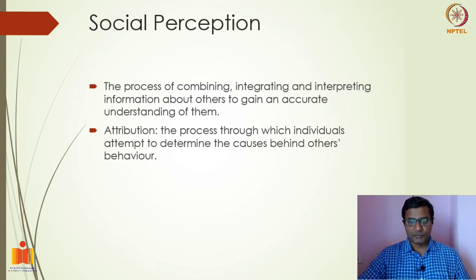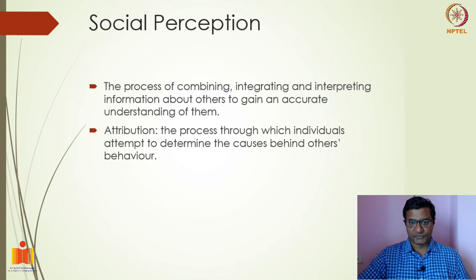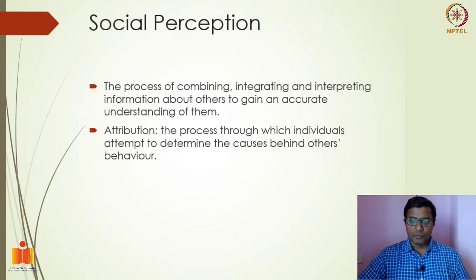The first element of social perception we are looking at is how do we understand ourselves and others, or how do we make sense out of others' and our own behavior. Second, when we try to understand behavior — both our behavior and others' behavior — how do we attribute the cause, or what cause do we attribute.